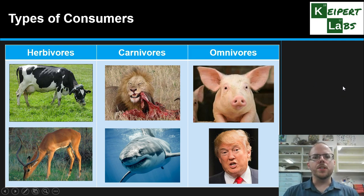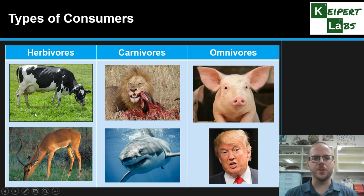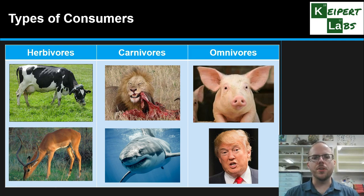There are three main types of consumers we would talk about: herbivores, carnivores, and omnivores. A herbivore refers to only eating plants or vegetation — so your cow and your gazelle; they will only eat green plants as their source of energy. Carnivores only eat meat — so your lion, your great white shark — they only eat meat and don't eat plant matter.